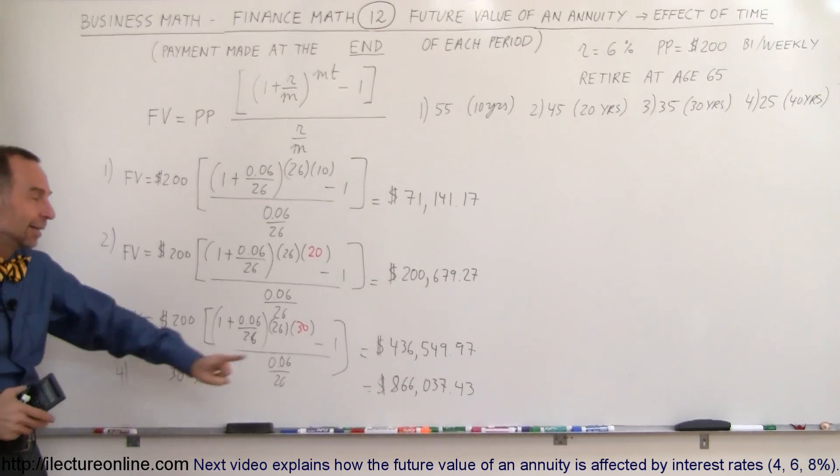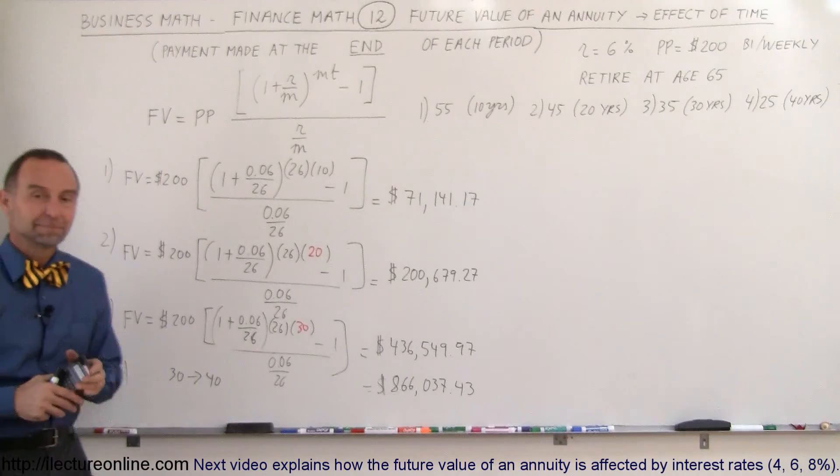The power of annuities is in its longevity. If you can just start early enough, get yourself disciplined enough to say, I'm going to put some money aside and start saving my annuity early, you can end up with a very nice savings account for retirement. And that's what we mean by annuities. The future value of annuity really depends on time. It's the effect of time that has all the power in that compounded interest. And that's how we do that. Thank you.